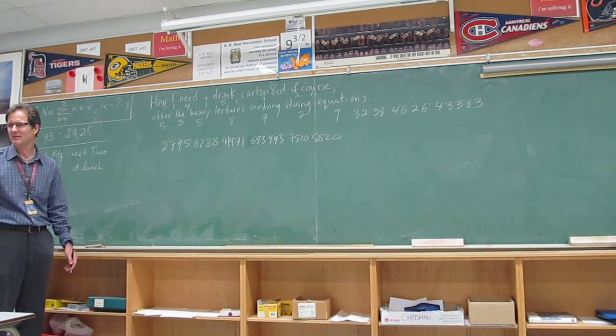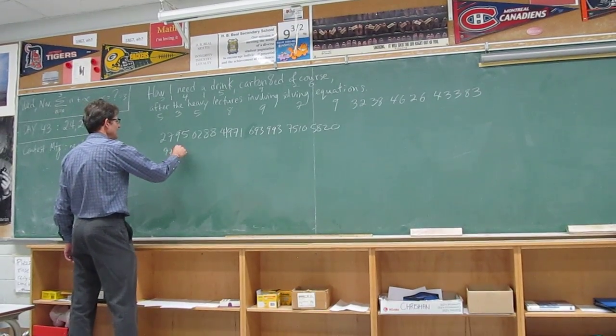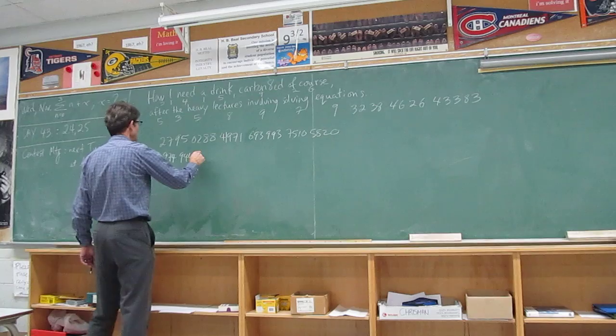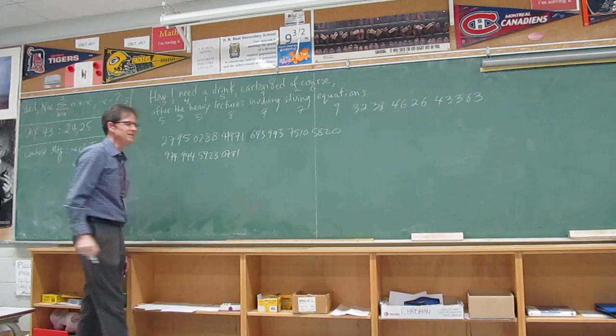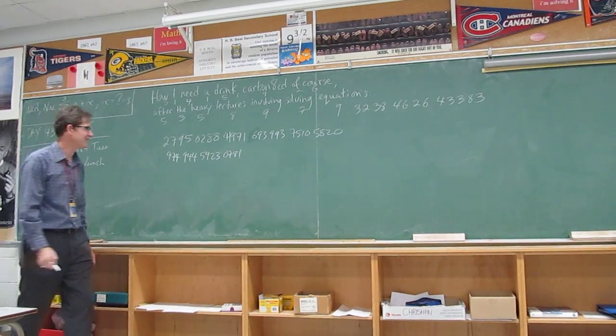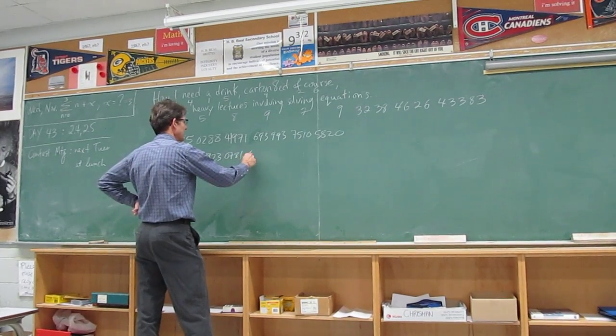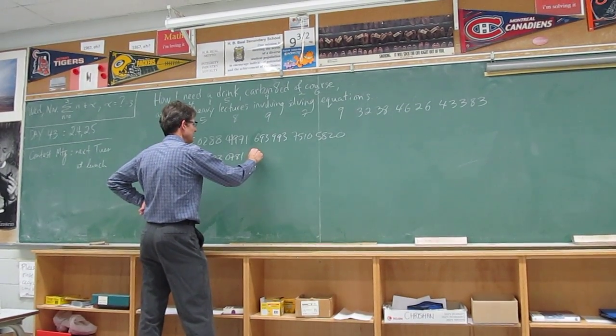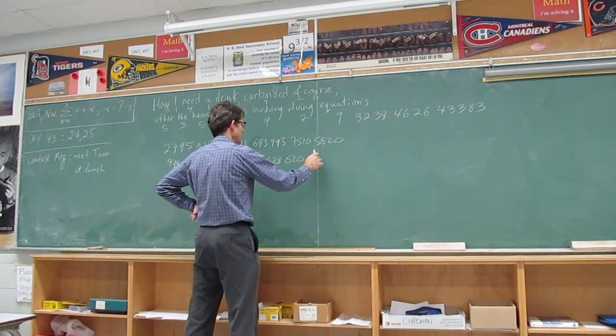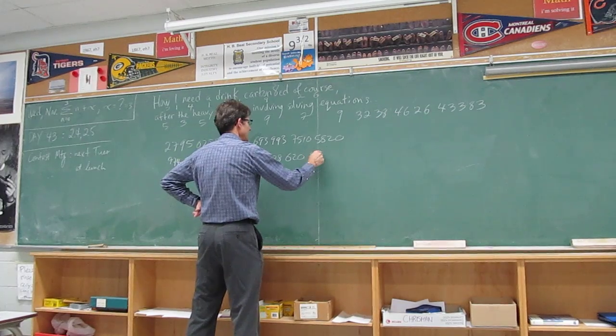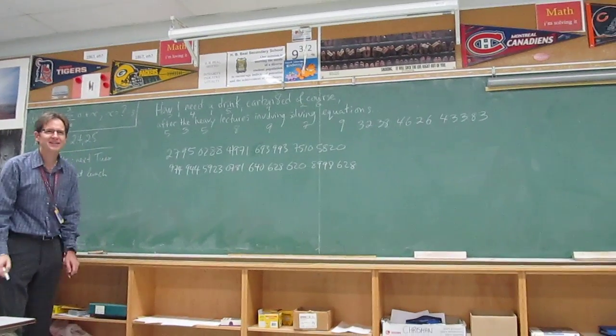Third row on the pi r squared button. Nine, seven, four, nine, four, four, five, nine, two, three, zero, seven, eight, one. So far so good? All right. Sometimes I lose my train of thought here. Six, six, four, zero, six, two, eight, six, two, zero, eight, nine, nine, eight, six, two, eight. Is that right? So far so good? All right.